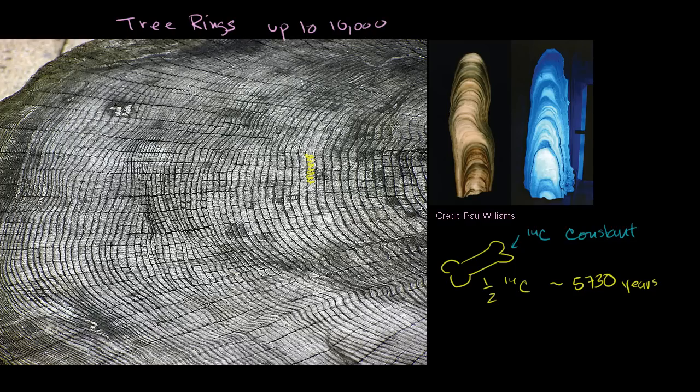If you want to go even further back, you can look at cave deposits. And the fancy word for these cave deposits are speleothems. You might be familiar with stalagmites. Those are those speleothems that are kind of coming out of the bottom of the cave, or stalactites. Those are the speleothems that are coming from the top of the cave.